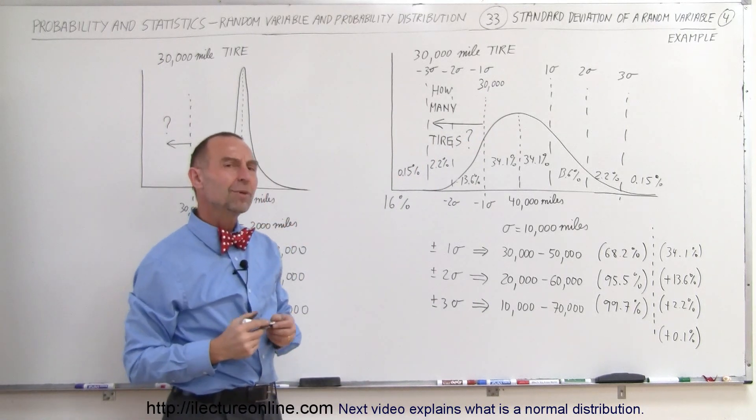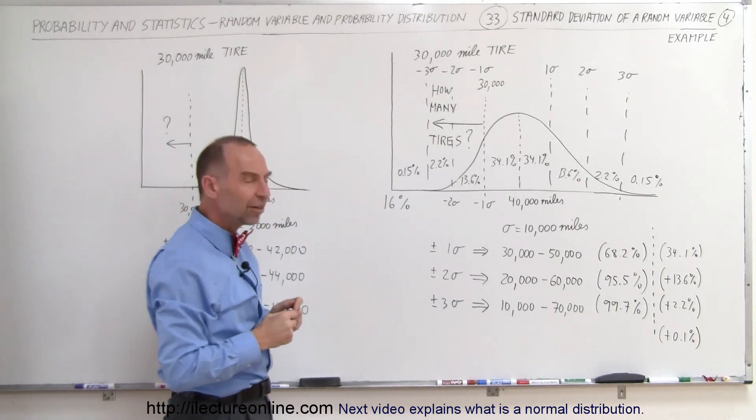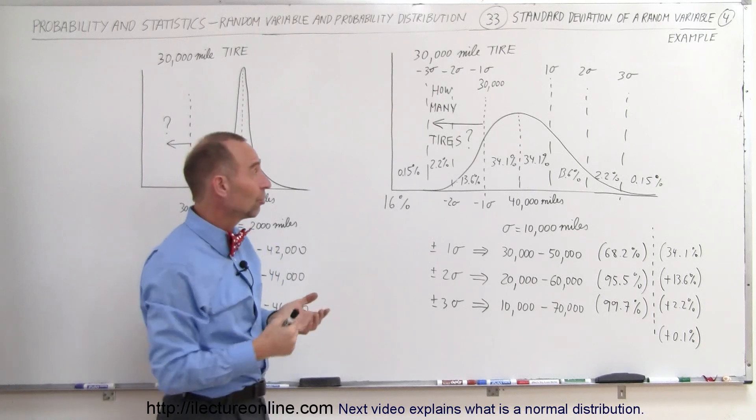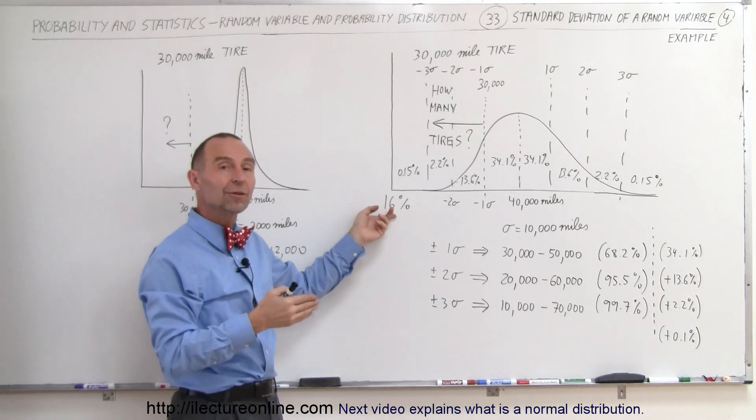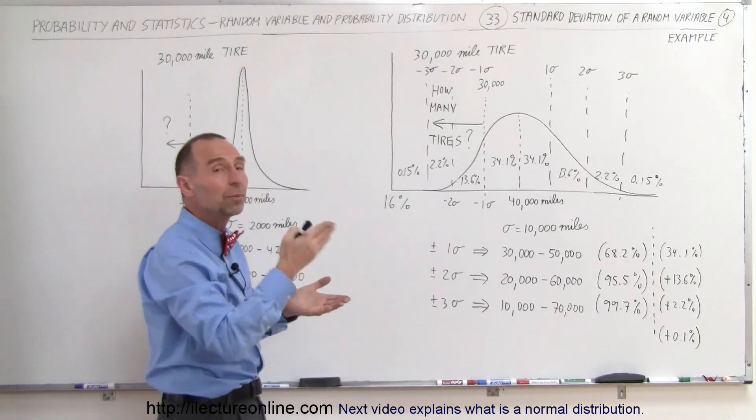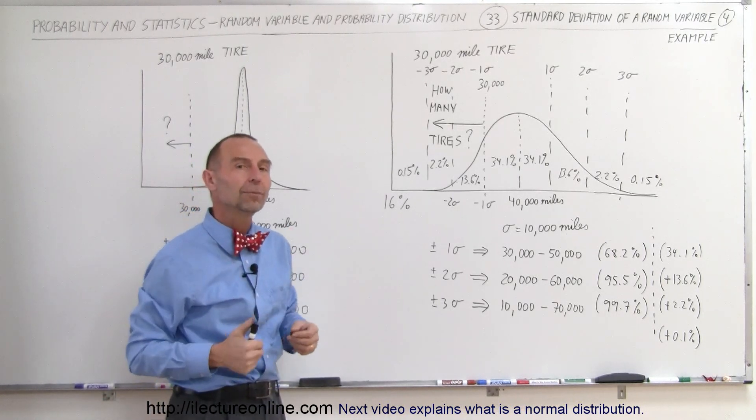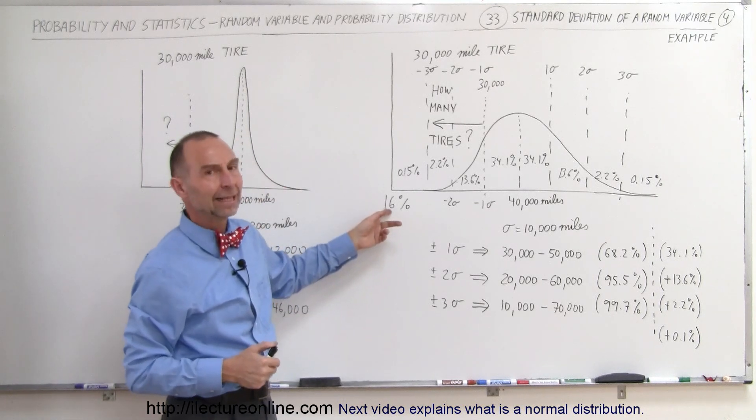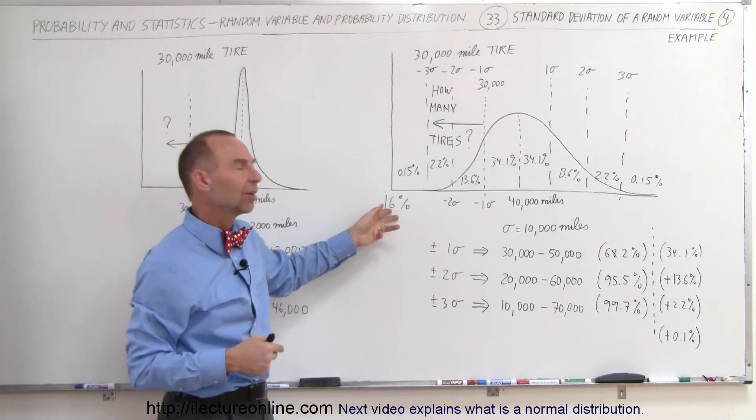What's 16% of a million? Well, that's 160,000 tires. So you'd be selling tires and 160,000 of them out of a million, the people would not get the 30,000 miles out of it and they would be coming back for some return on their money because it didn't last as long as they were advertised to last.